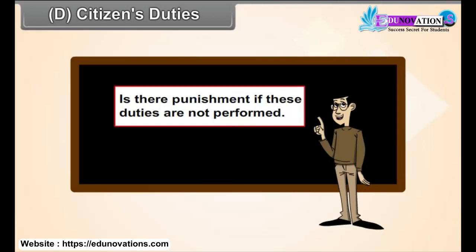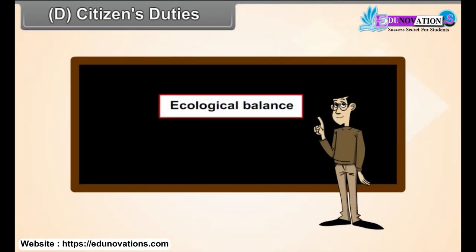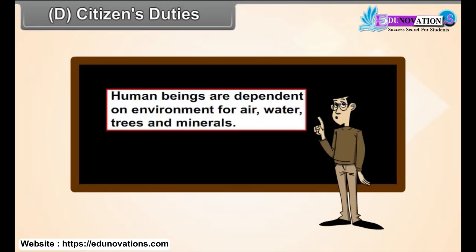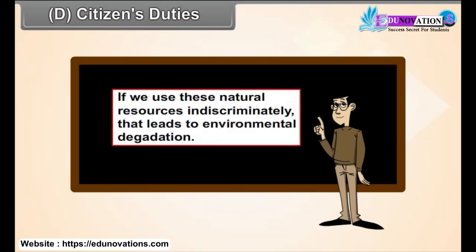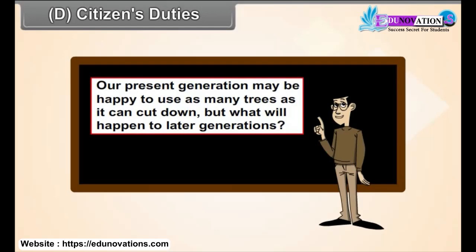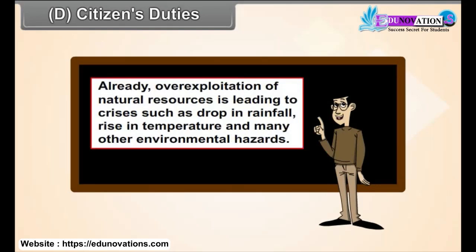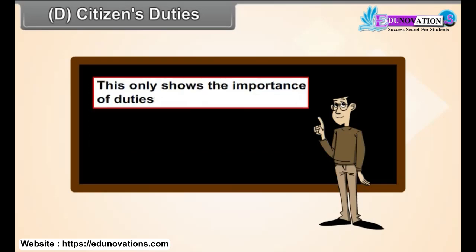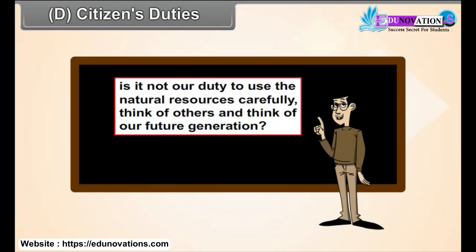Is there punishment if these duties are not performed? Ecological balance: Human beings are dependent on environment for air, water, trees and minerals. If we use these natural resources indiscriminately, that leads to environmental degradation. Our present generation may be happy to use as many trees as it can cut down, but what will happen to later generations? Already, over-exploitation of natural resources is leading to crises such as drop in rainfall, rise in temperature and many other environmental hazards. This only shows the importance of duties — it is our duty to use the natural resources carefully. Think of others and think of our future generations.